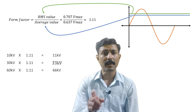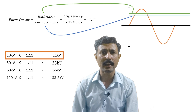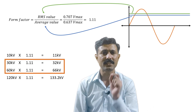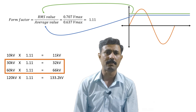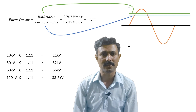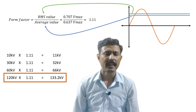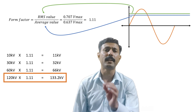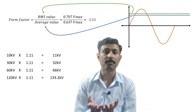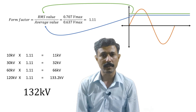If I multiply 1.11 with 10 kV, that definitely gives me 11 kV. With 30 kV, that gives me 33 kV. If done with 60 kV, it gives me 66 kV. And all these voltages we are using in distribution and transmission systems. But if I multiply it with 120 kV, it gives me 133.2 kV. But we are not using 133.2 kV — instead, we are using 132 kV.